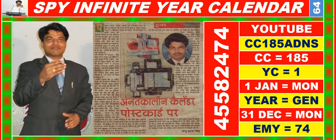Good morning, dear friends. You are heartily welcome in Master Key of Success. In this video you are watching SPY Infinite Year Calendar for the year having calendar code equal to 185, as well as you may search it on YouTube by CC185, ADNS.